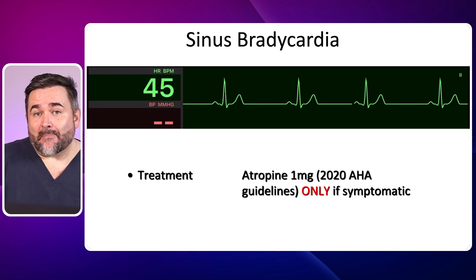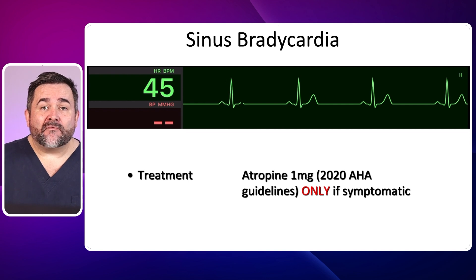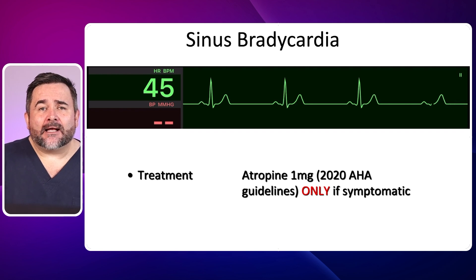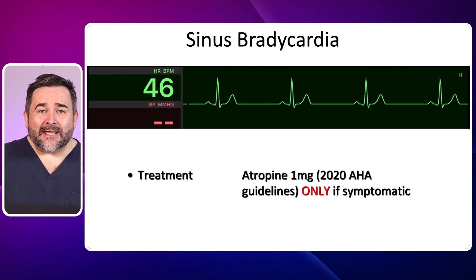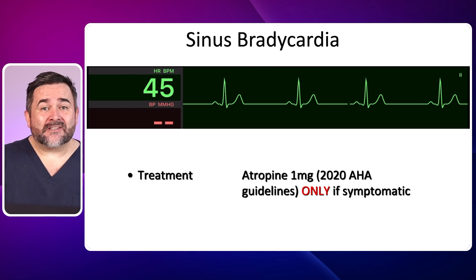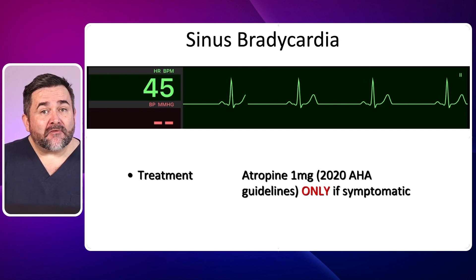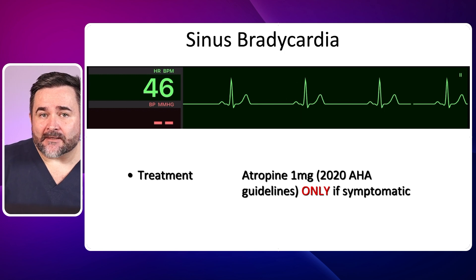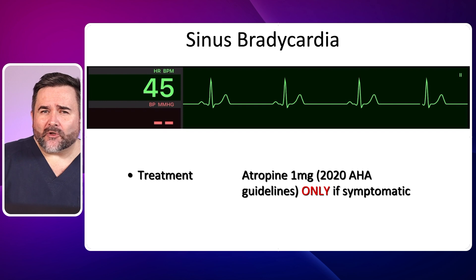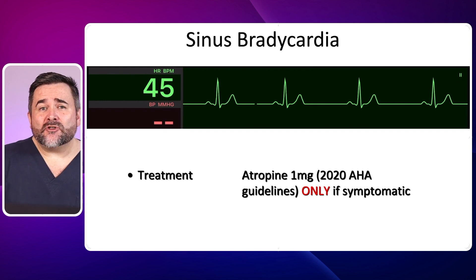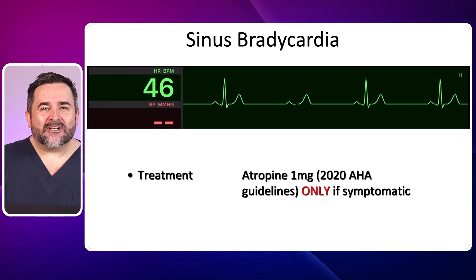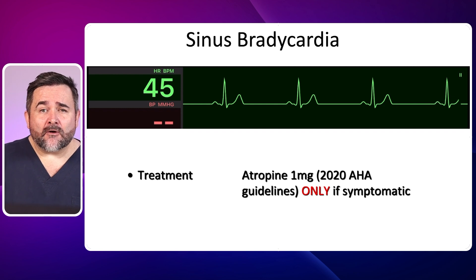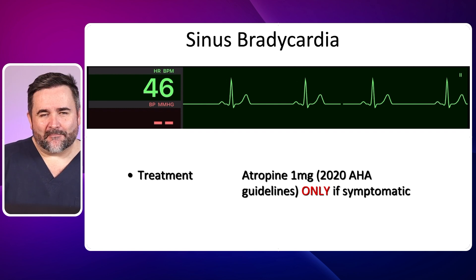The patient can appear pale, cool and clammy with a low blood pressure, to mention a few. Pathological causes of sinus bradycardia can include acute myocardial infarction, drugs such as beta blockers or calcium channel blockers, raised intracranial pressure, hypothermia, and also hypothyroidism. First line treatment, which is important for your NCLEX, includes Atropine 1mg as per 2020 American Heart Association guidelines. See our bradycardia video for more in-depth review of bradycardia.